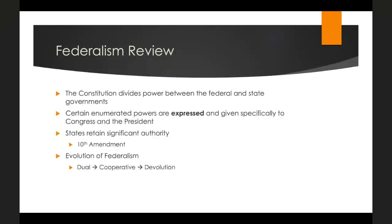A quick review of federalism: the Constitution divides power between the federal and state governments. We have to think of the Constitution as much as a contract that sets up governments between sovereign states as it is a national government. There's dual sovereignty between state and federal governments, in which the Constitution expanded federal power, giving Congress and the president enumerated or expressed powers that we did not have during the Articles of Confederation.